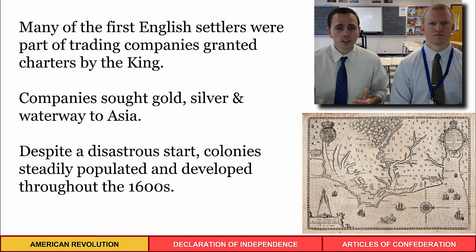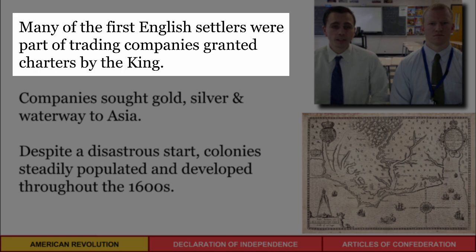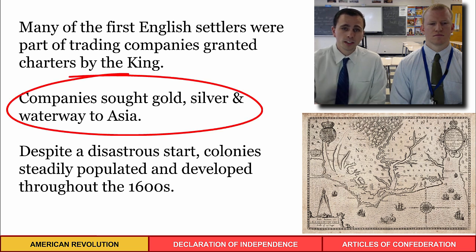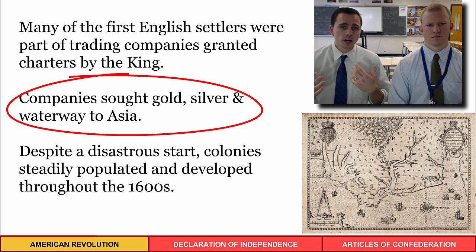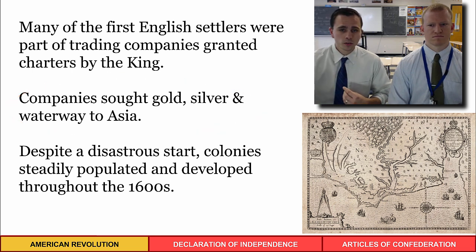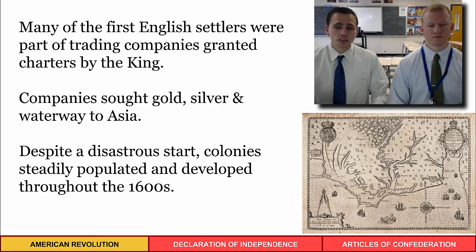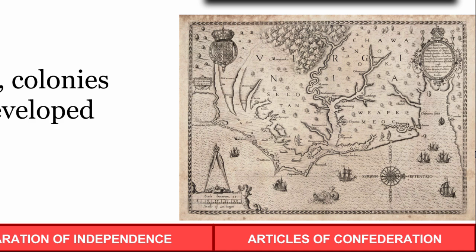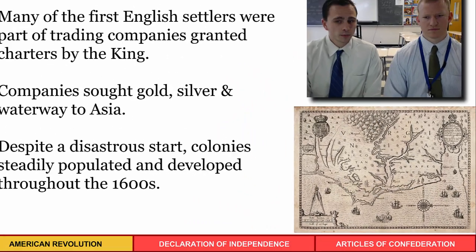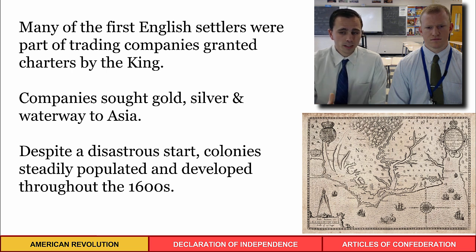The origins of the American colonies started with English settlers who were part of trading companies, granted charters by the king. Their sole purpose was to find gold, silver, and a waterway to Asia — not to create a new country. They were out to get profits and raw materials. This was largely disastrous; Roanoke Island is a good example of an early colony that fell apart and collapsed.